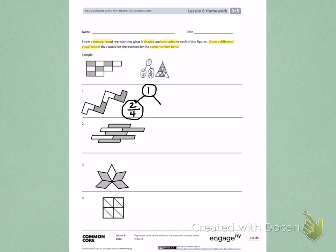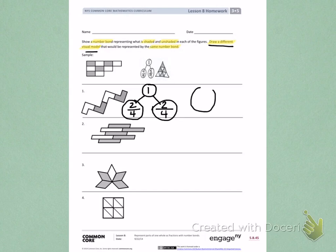Looking at the same picture, there are two parts that are unshaded and there are still four equal parts, so two-fourths are unshaded. My next step is to draw a different visual model. I'm going to choose to draw a circle divided into fourths, and I'm going to shade two-fourths. That is a different visual representation of the same numbers.